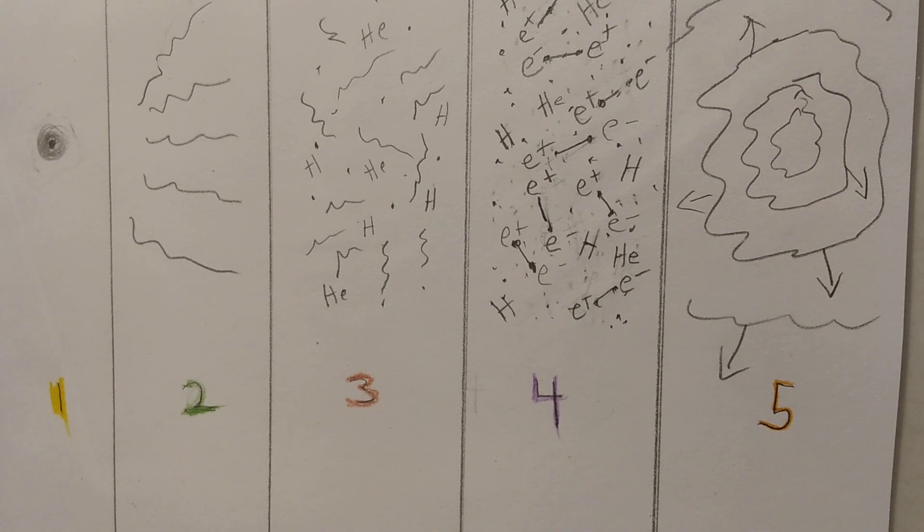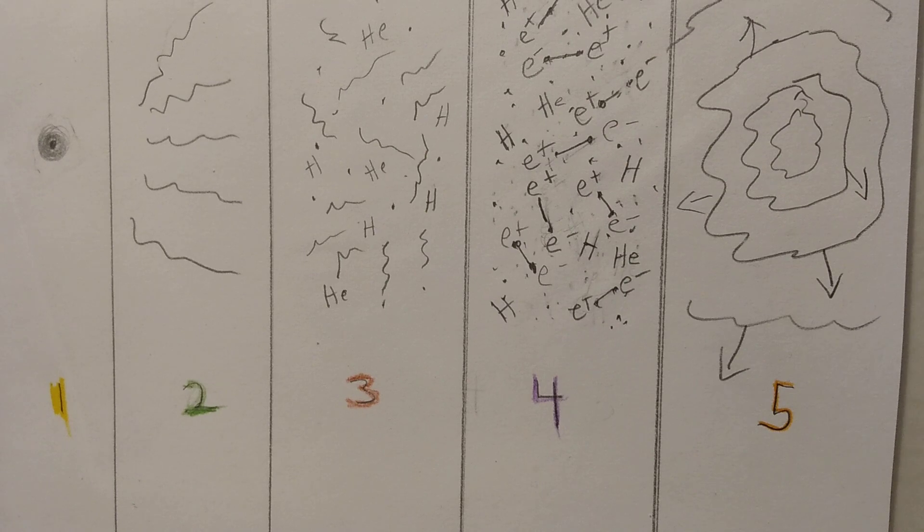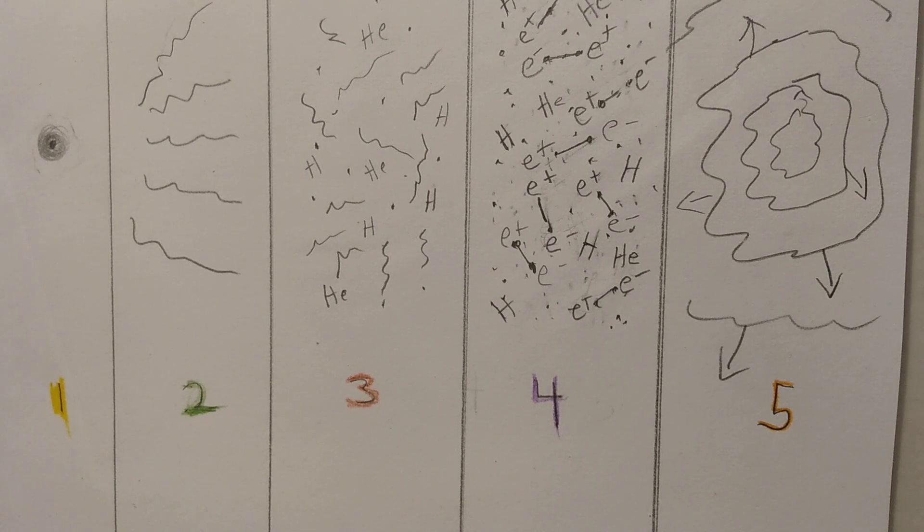My model for the first events in the beginning of the universe, from left to right. Point 1: Singularity before the Big Bang was eternal photons.